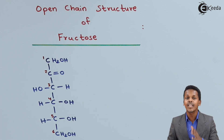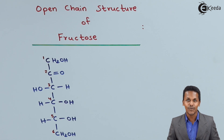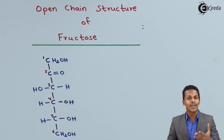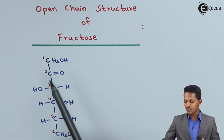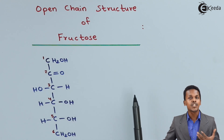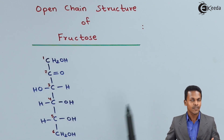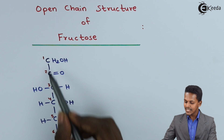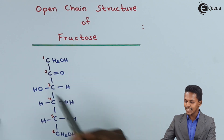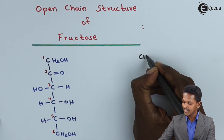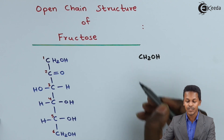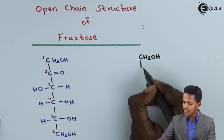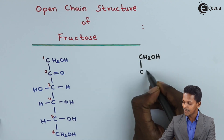Now let us understand how we can draw the Fischer's projection formula for fructose. By taking the reference of this structure, we can easily draw the Fischer's projection formula. We can see there is CH2OH, which is the first carbon atom, and the next carbon atom is C double bond O.